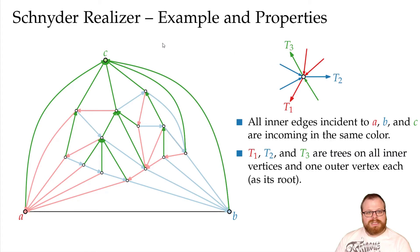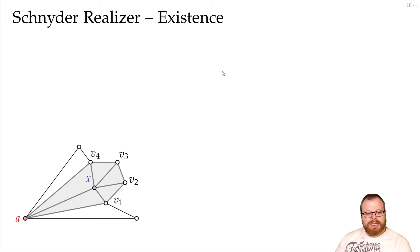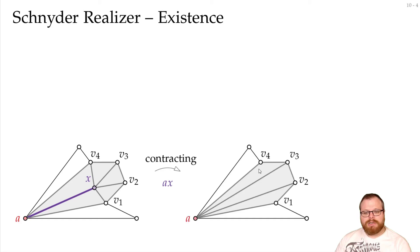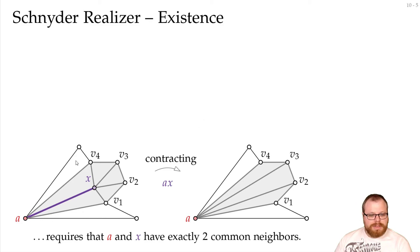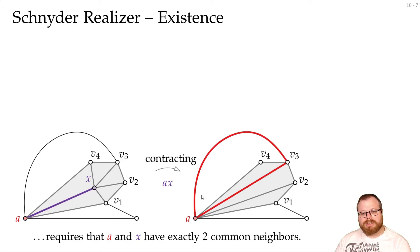We now want to prove that such a Schnyder realizer always exists. And for that, we want to make use of edge contraction. Contracting edges, you already know from the first lecture, from minors. Let's say we have this edge AX here, and we want to contract it. Then we get the following, which looks like this. And since we want this still to be a triangulation, it's important that A and X only have exactly two common neighbors. Otherwise, if we assume that V3 is also a common neighbor like here, then we would get this drawing. But now we see that we have a multi-edge here, and this is not allowed.